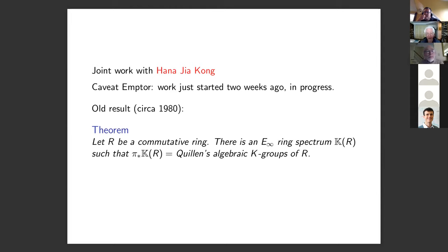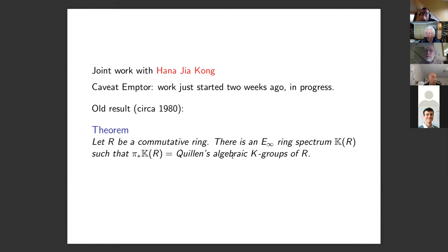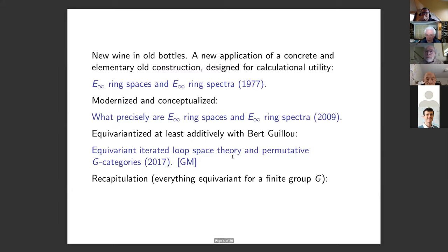I'll start with a very old result: if R is a commutative ring, then there is an E-infinity ring spectrum KR whose homotopy groups are Quillen's algebraic K-groups of R. In some sense this is the starting point of derived algebraic geometry — it's the basic result that tells you that E-infinity ring spectra are interesting objects.